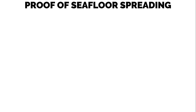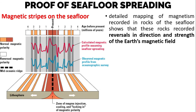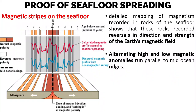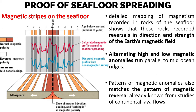What are the proofs of seafloor spreading? First is the magnetic stripes on the seafloor. Detailed mapping of magnetism recorded in rocks shows that these rocks recorded reversals in direction and strength of the Earth's magnetic field. As you can see in the graph, there is alternating high and low in the red and blue patterns — it goes down then up, down then up — that's reversal. Alternating high and low magnetic anomalies run parallel to mid-ocean ridges, and the pattern of magnetic anomalies also matches the pattern of magnetic reversal already known from studies of continental lava flows.